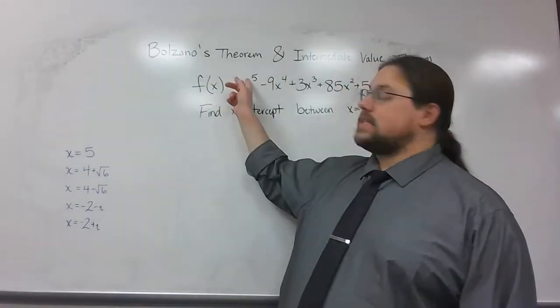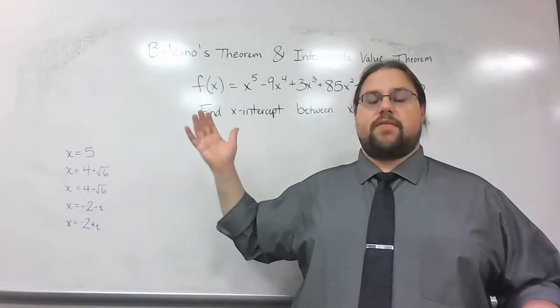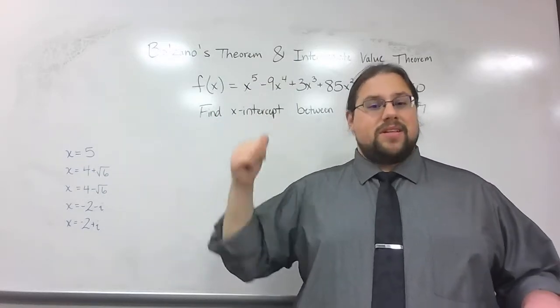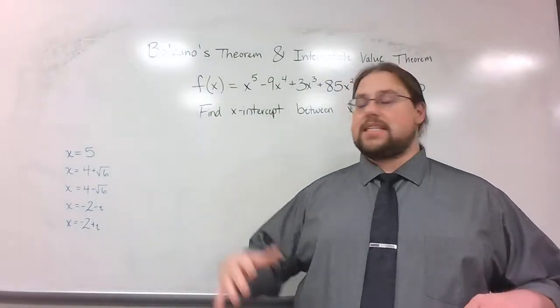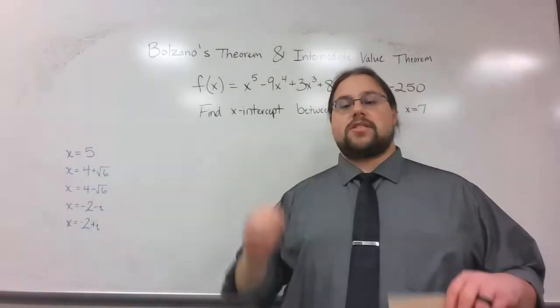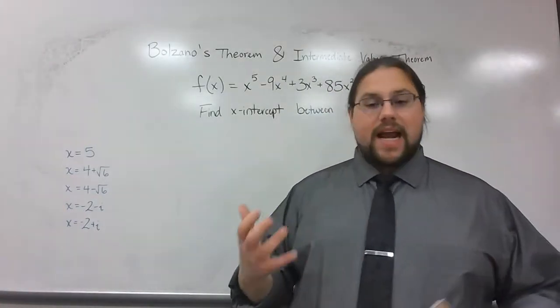The quadratic formula would only work if it was x squared, this is x to the fifth. There's no formula for an x to the fifth polynomial. Also, long division and synthetic division are only going to get you that 5. They're not going to get you the other ones. It's just going to be nasty to try to find these other answers. And so that's why this process that I'm getting ready to show you is very handy.